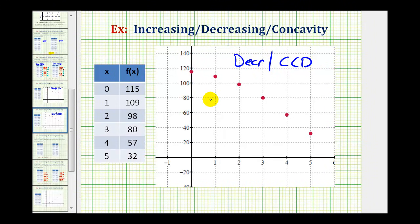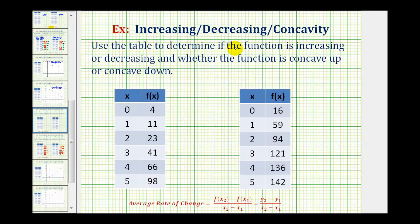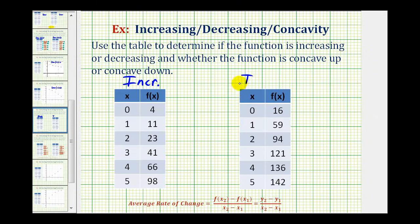Let's take a look at two more examples with two different tables. We'll first determine if the function is increasing or decreasing, and then determine the concavity. Notice in this first table, as the x values increase, the function values are increasing each time as well, so this is an increasing function. Notice in the second table, the same thing is occurring — as x increases, the function values increase as well. So both of these tables represent increasing functions.